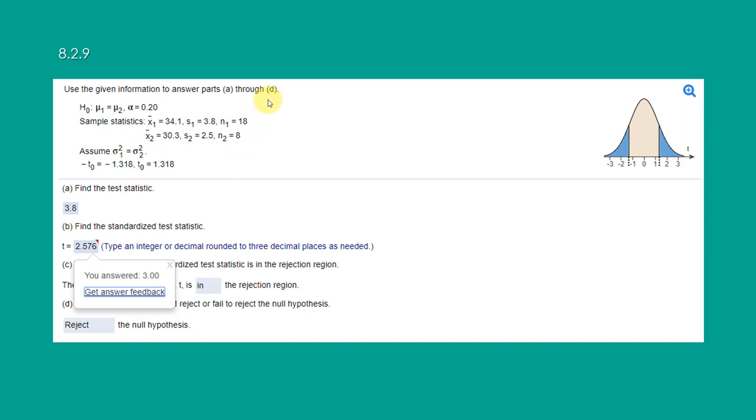The first problem, 8.2.9, you're given information that the null, the two means are equal, alpha is 0.2, and the sample statistics are given, the summary statistics, the mean of sample 1, the standard deviation of sample 1, and the sample size. Same information for sample 2. Note down here that you're told the variances are equal.